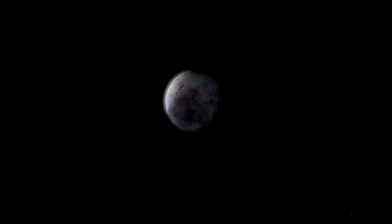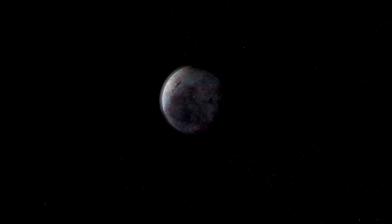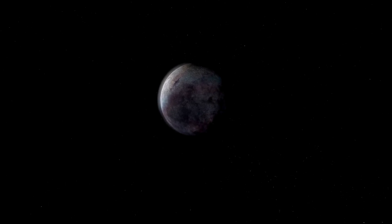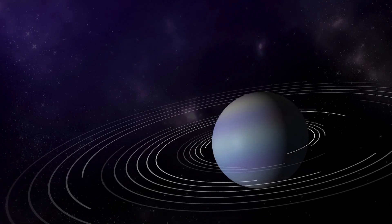Others, however, suggest that life might find a way to adapt to these extreme conditions. Could there be organisms on Proxima b that have evolved to survive in such a volatile environment? Or is the planet doomed to remain a barren rock devoid of life?